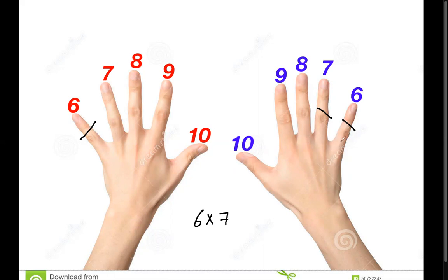Now, the numbers you close, you count them by 10. So that's 10, 20, 30. So that gives you 30. And the numbers that are not closed here, you have 1, 2, 3, and here 1, 2, 3, 4. You multiply 3 by 4, you get 12. And therefore you add the 12 to the 30 and you get 42, and that's your answer.